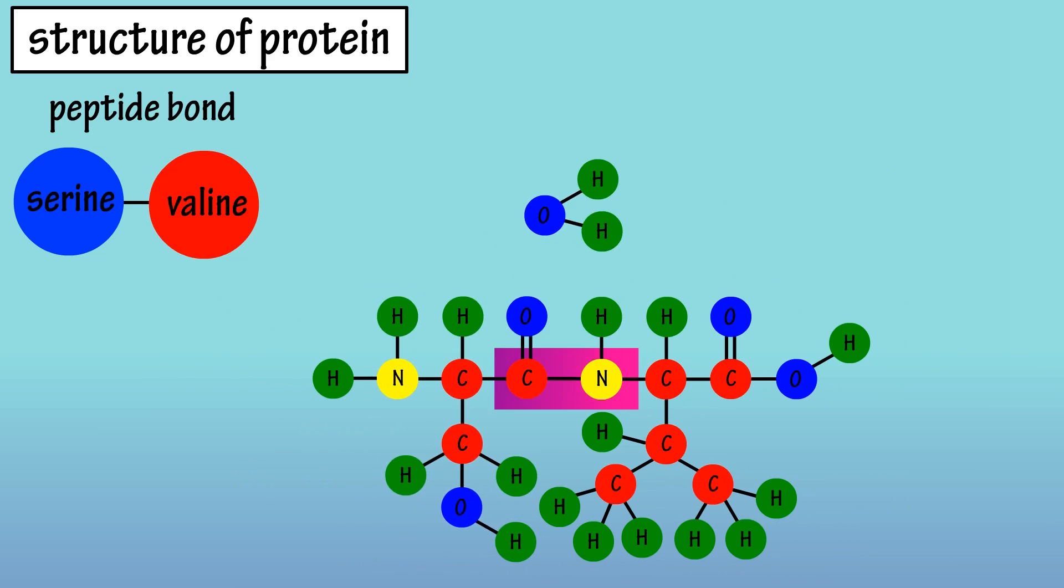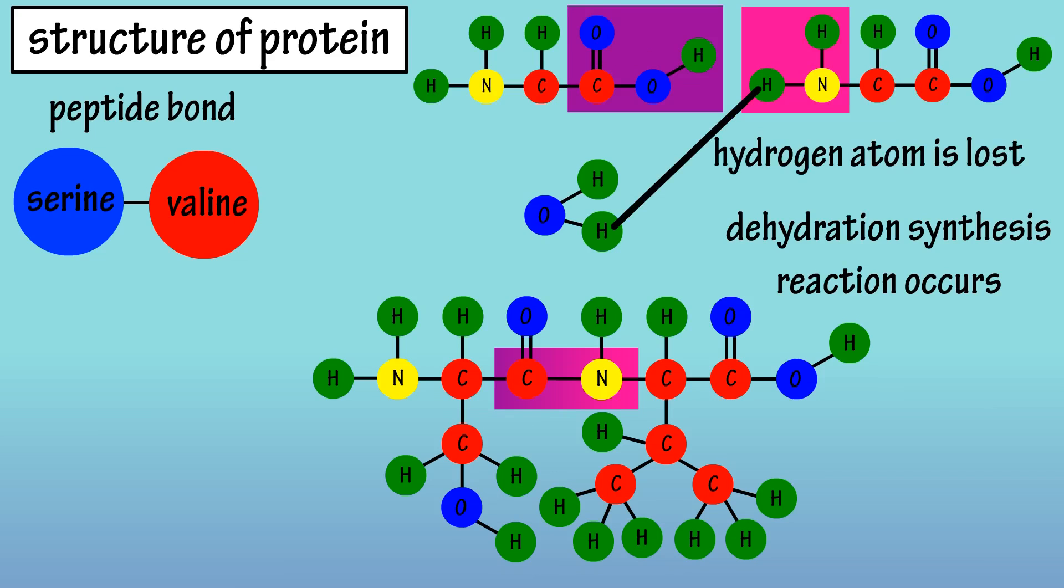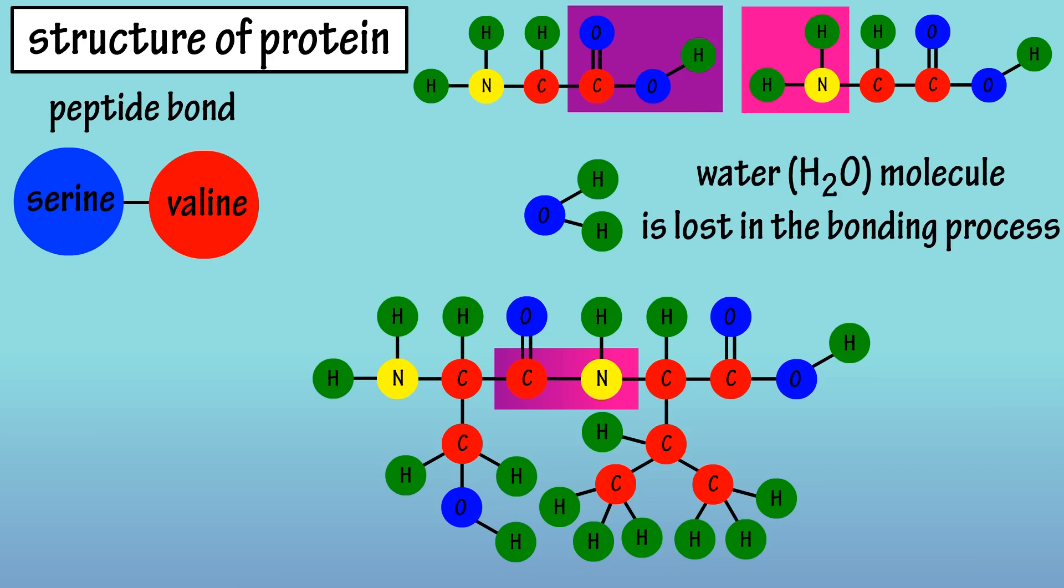As you can see here, this is done through a dehydration synthesis reaction, as the amino group involved in the bond loses a hydrogen atom, and the carboxyl group involved in the bond loses an oxygen and hydrogen atom. So, the peptide bond results in the release of a water H2O molecule.